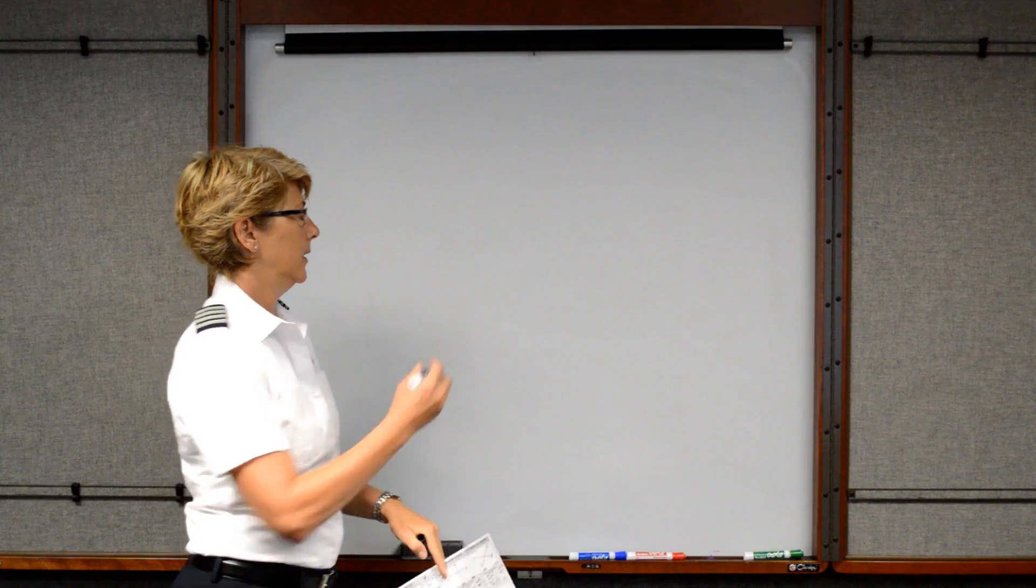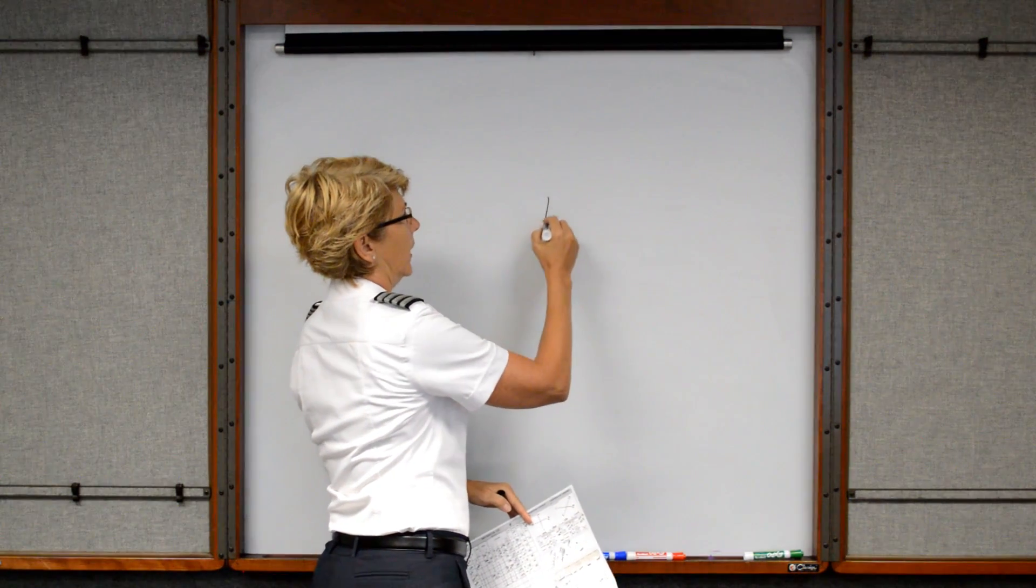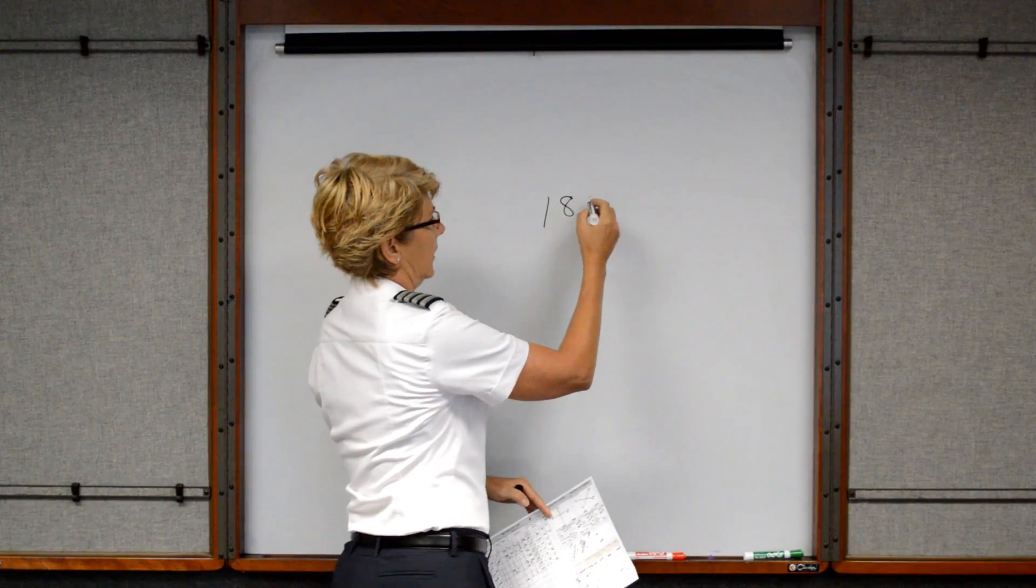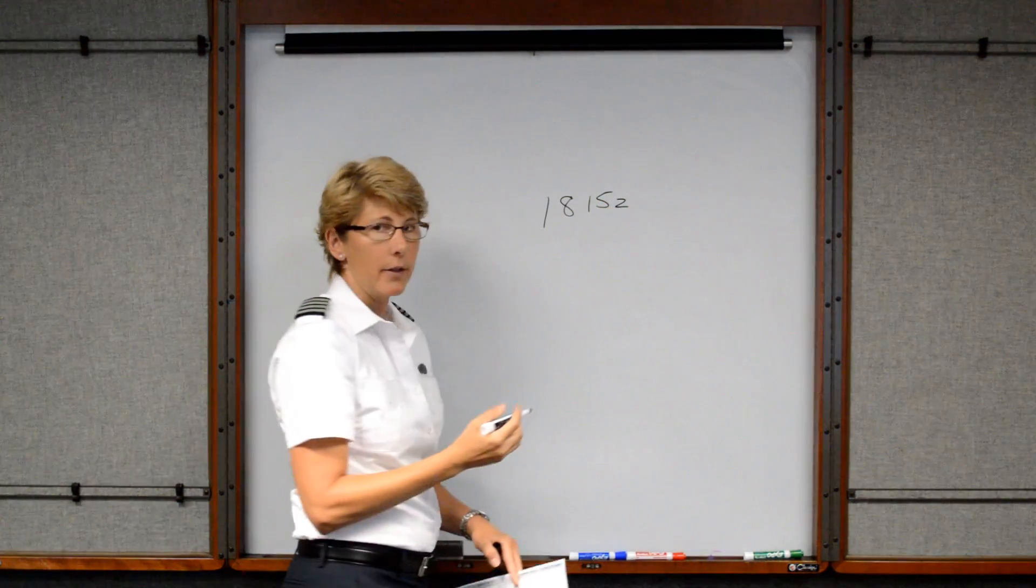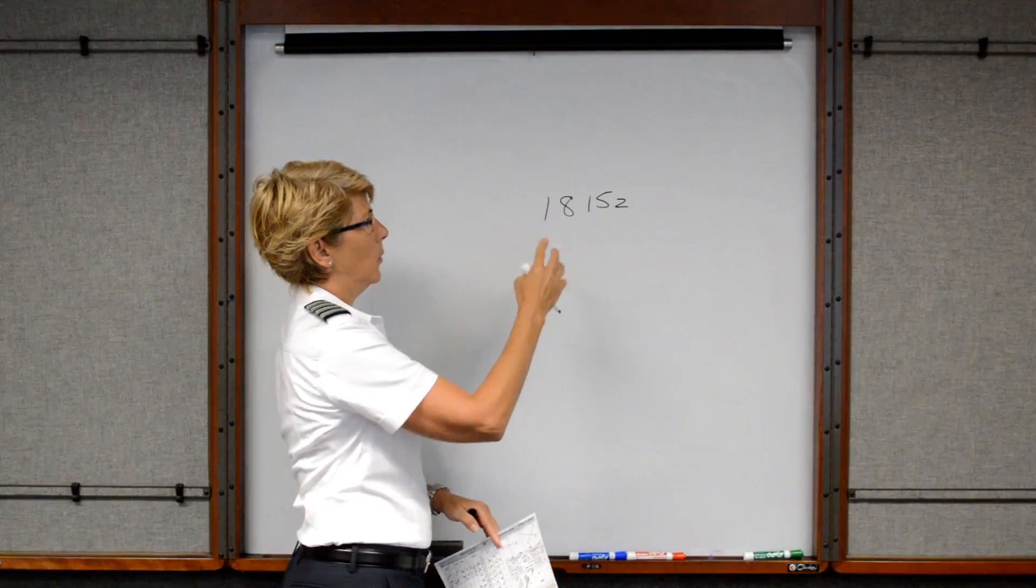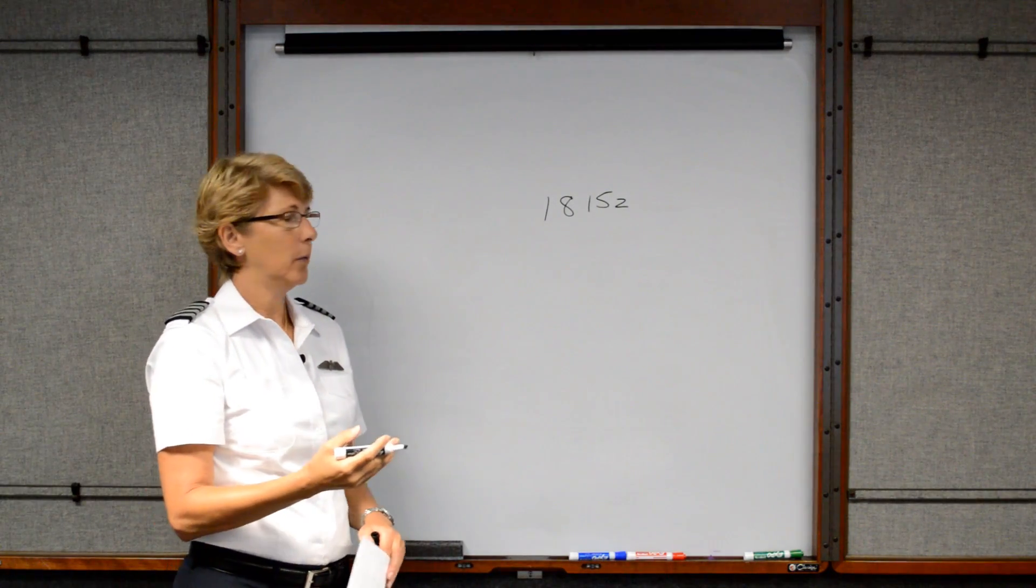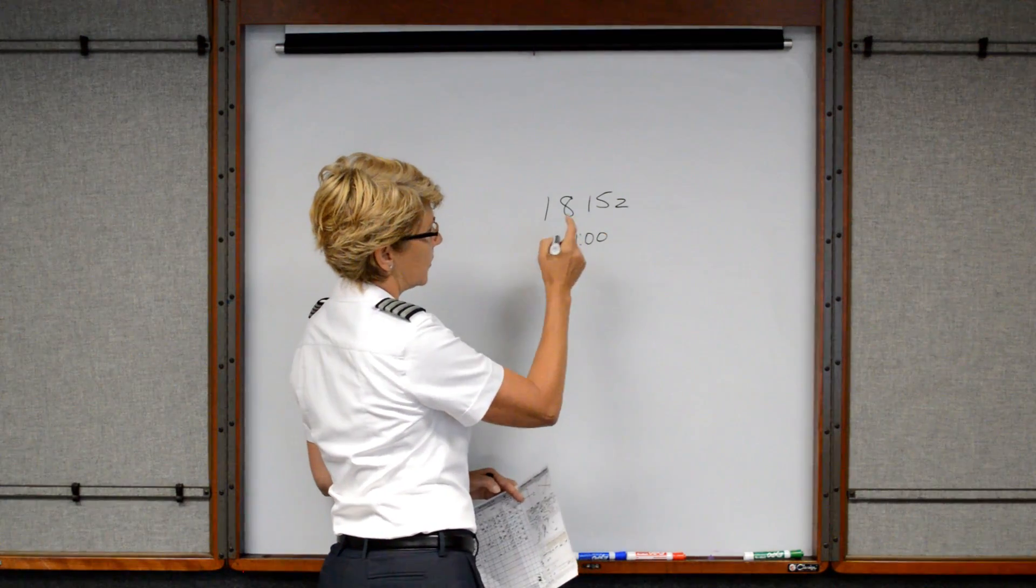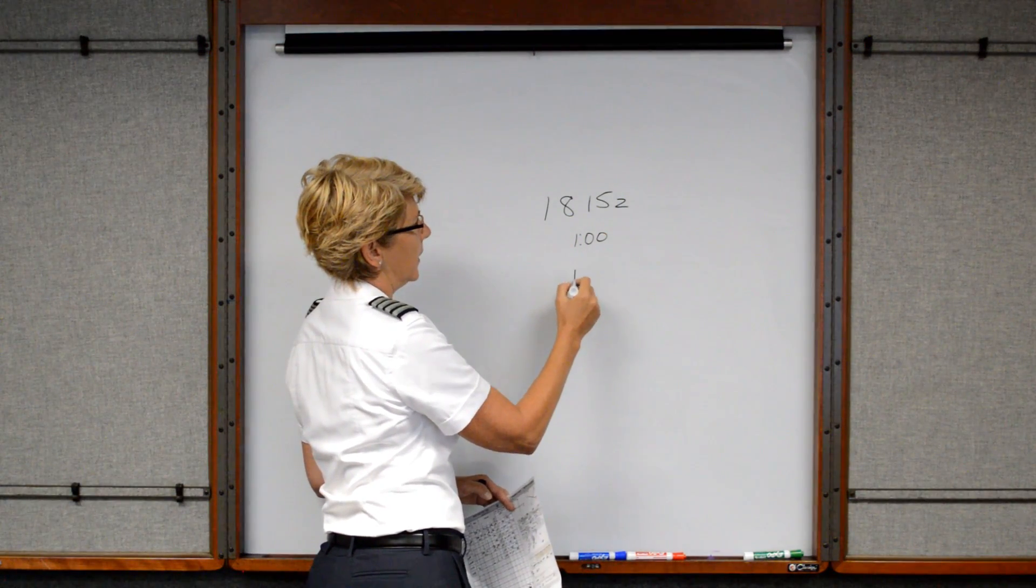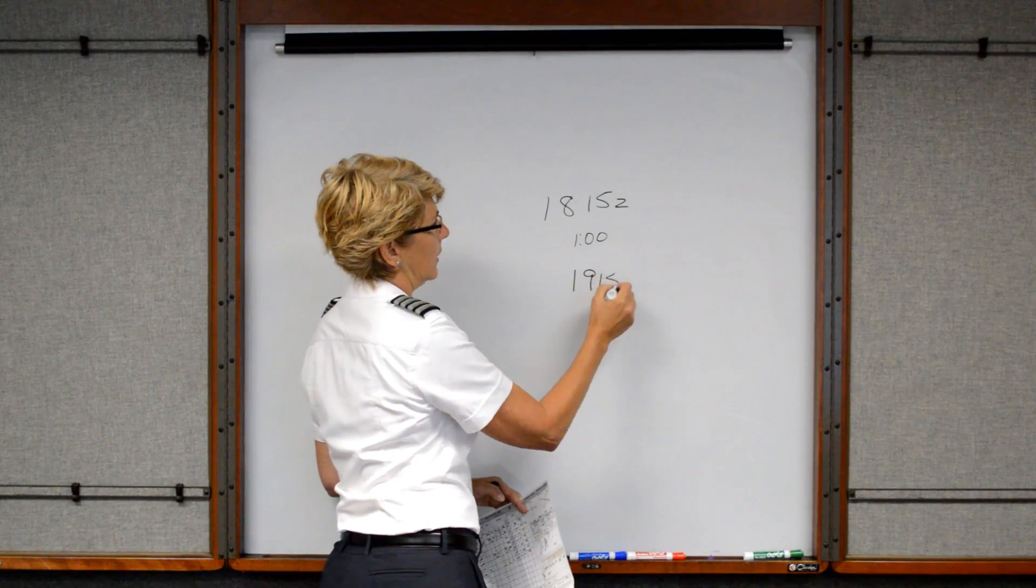Let's say we're sitting at the hold short line and it's actually 1815 Zulu when we call the flight service station. Well that's okay, we can depart a little bit later than what we said, but they're still going to time it for one hour. So they would expect us to arrive in Columbia at 1915 Zulu.